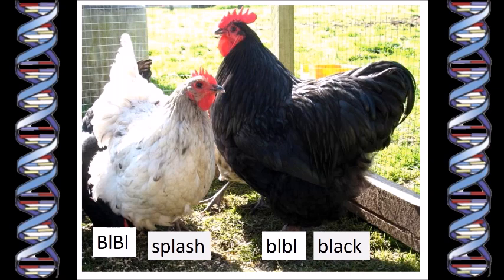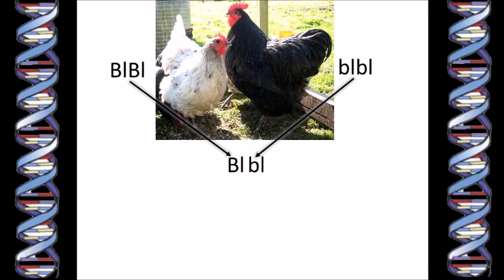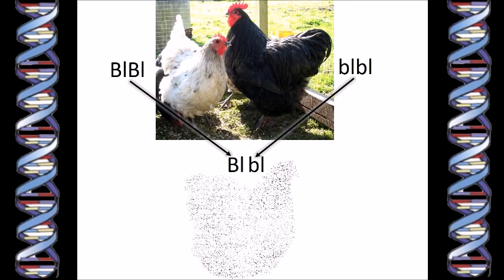If we mate a chicken with two genes for black with a chicken with two genes for splash, we know that the baby chick will have one of each kind of gene. You might wonder if the capital letter is giving you a clue, since dominant genes are usually shown as a capital letter and recessive genes with a lowercase letter. But the gene for black feathers is not recessive — these two genes are co-dominant, which means a chicken with one of each, a heterozygous chicken, is neither black nor splash, but a colour in between, called blue.